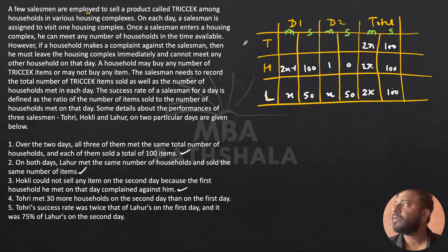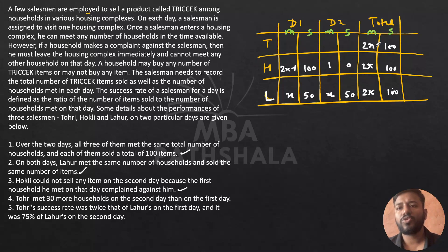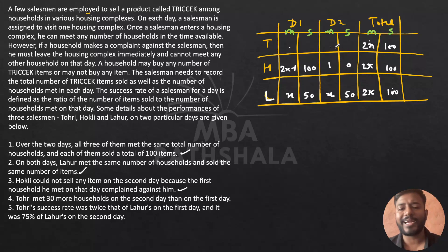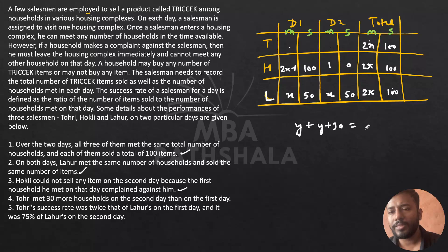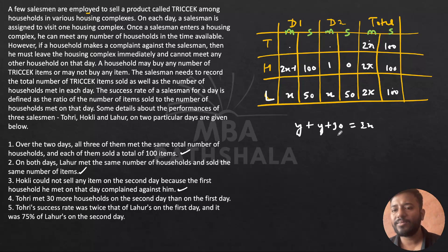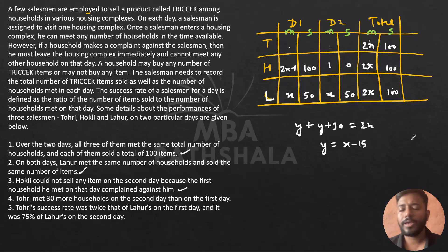Tori met 30 more households on Day 2 than on Day 1. His total is 2x. If Day 1 is y, then Day 2 is y + 30, and y + (y + 30) = 2x, giving 2y = 2x − 30, so y = x − 15. Therefore Tori met x − 15 households on Day 1 and x + 15 on Day 2.